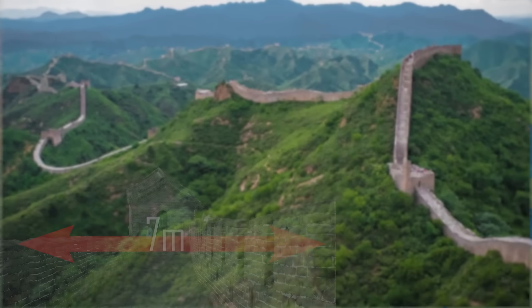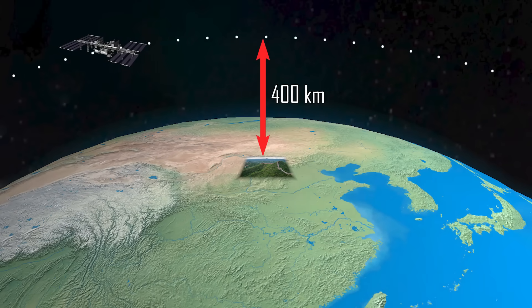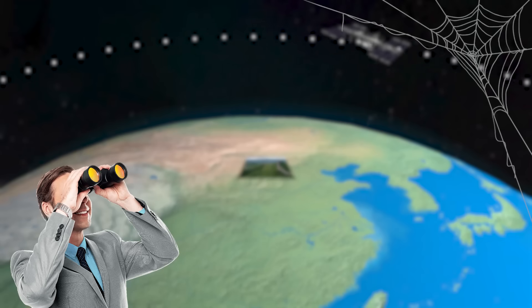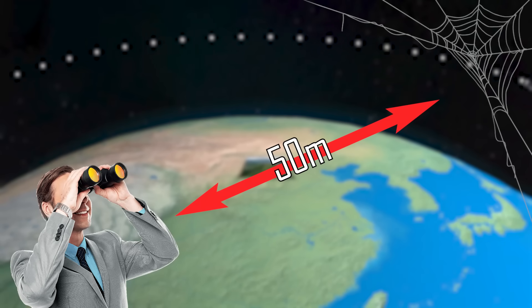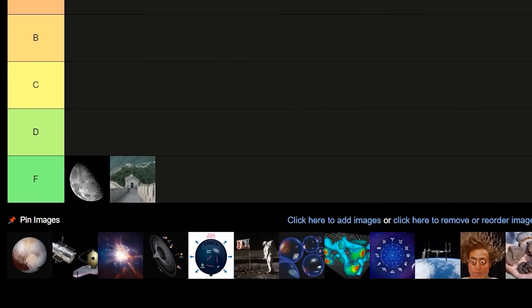The Great Wall of China is visible from space. The wall is 7 meters wide, and you'd be looking from 400 kilometers away. That's like trying to spot a spiderweb string from 50 meters away. Spoiler alert, you can't even with binoculars.